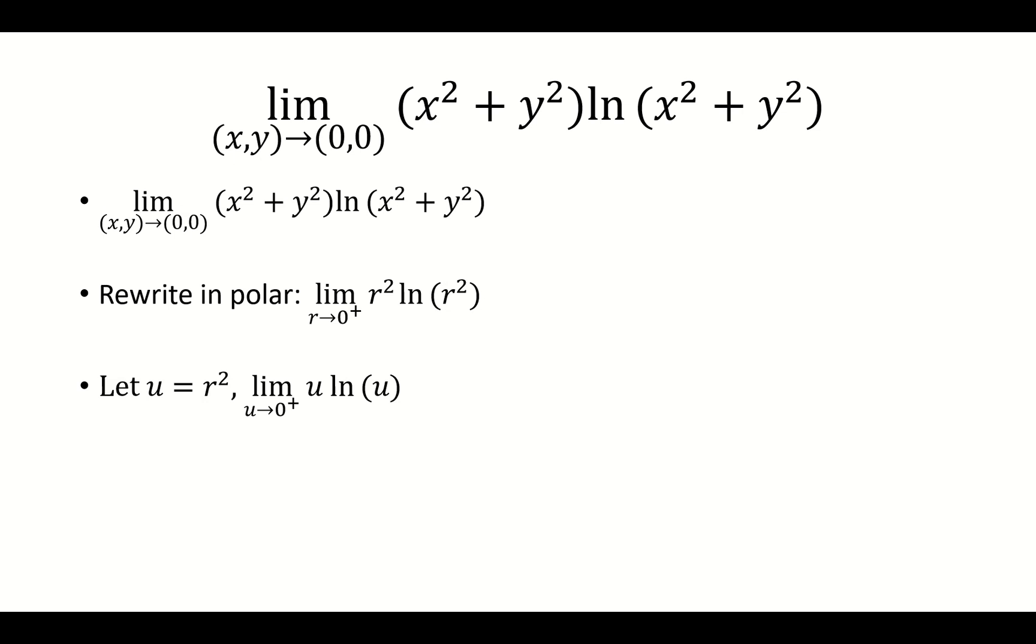And as r approaches zero from the right, u will also approach zero from the right because the idea is that r² can never be negative. So r² is being approached from the right of zero, so u will also be approaching from the right of zero.